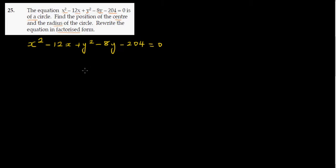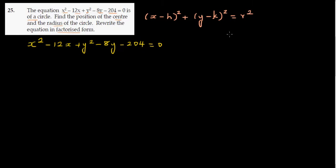To write this in standard form, the standard form of a circle is: x minus h, the whole squared, plus y minus k, the whole squared, equals r squared. This is the standard form of a circle with center h comma k and radius r.